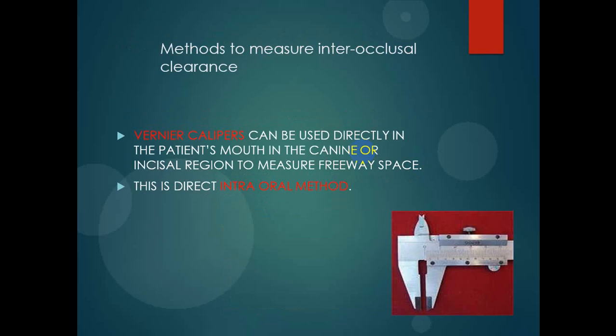Method to measure interocclusal clearance: a Vernier caliper can be used directly in the patient's mouth in the canine or incisal region to measure freeway space. The freeway space between the upper and lower arches at rest position is measured using the Vernier caliper. This is an intra-oral method where we use the Vernier caliper to measure the freeway space at rest position.